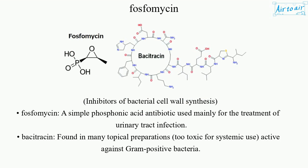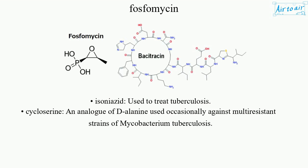Inhibitors of bacterial cell wall synthesis. Phosphomycin: a simple phosphonic acid antibiotic used mainly for the treatment of urinary tract infections. Bacitracin: found in many topical preparations, too toxic for systemic use, active against gram-positive bacteria. Isoniazid: used to treat tuberculosis. Cycloserine: an analog of D-alanine used occasionally against multiresistant strains of Mycobacterium tuberculosis.